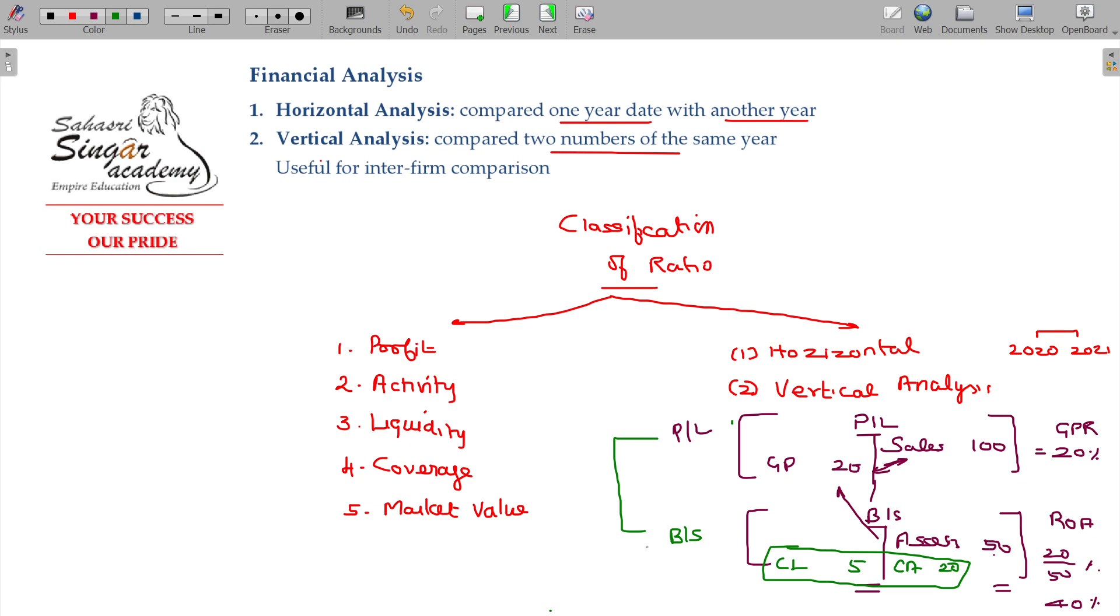Classification of ratios - this is one type of classification, this is another type of classification. Horizontal and vertical. The vertical analysis: PNL ratio analysis, PNL statement analysis, balance sheet analysis, compound analysis.